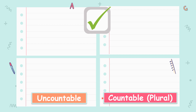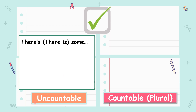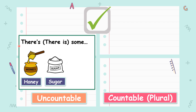And countable noun — plural, meaning many. A lot of things that you can see, you can touch and you can count. For example, uncountable: we start off with there is some. There is some honey. There is some sugar. There is some cheese. We use is because it is uncountable.